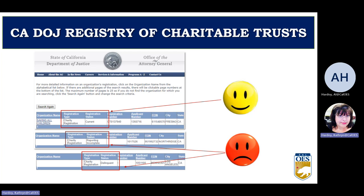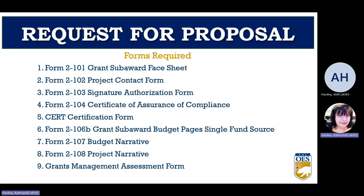There are nine forms required with every request for proposal, regardless of the program type. Please note that most programs will require additional forms, so read your request for proposal thoroughly. These next slides will cover some of the more common mistakes found on those nine forms so that you know what we're looking for. You can find these forms at the very end of the RFP in the checklist section, in the hyperlink to each form.